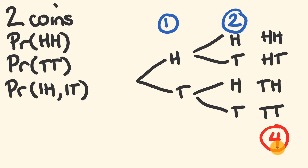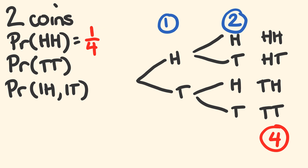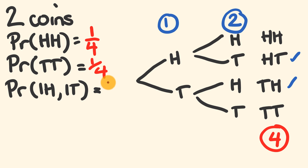So we can easily solve our questions. The probability of heads and heads — the total outcomes is four, and only one of these is heads-heads — so it's a one in four chance. For tails and tails it's the same thing: one out of four. What about getting one head and one tail? We have heads-tails and tails-heads, so altogether we have two out of four probability of that occurring. That's how you deal with multiple events occurring.